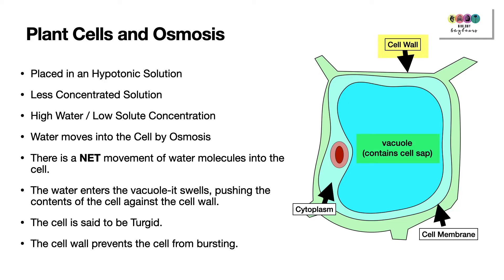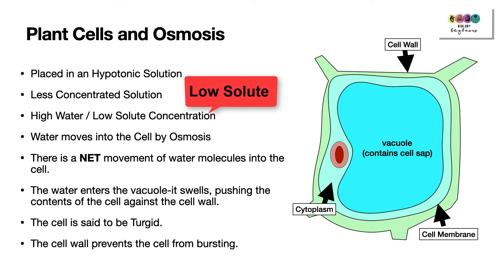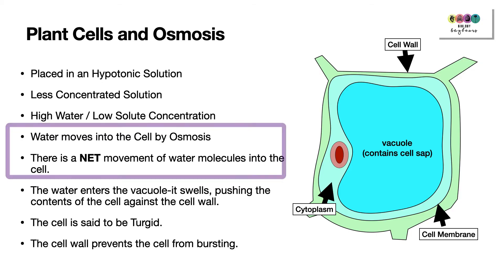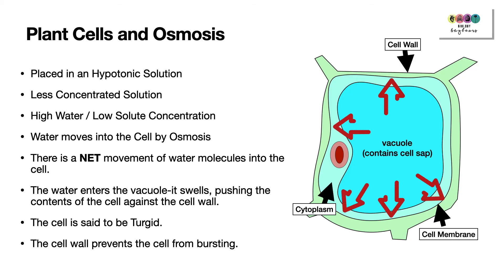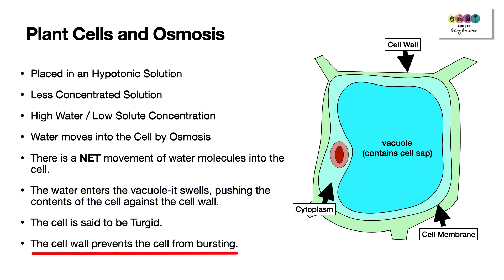How does osmosis affect plant cells? Bear in mind that plant cells have a cell wall and a vacuole with cell sap. If you surround a plant cell in a hypotonic solution — less concentrated, high water, low solute — water will move into the cell towards the solutes in the cytoplasm and vacuole. As water enters, the vacuole expands and pushes the cell contents against the cell wall. The plant cell is said to be turgid, and it's the cell wall that prevents the cell from bursting.